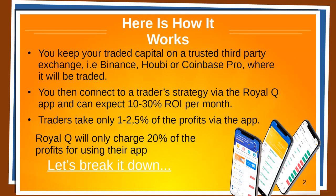You can expect somewhere between 10 to 30% return on your investment per month, but it's not guaranteed — these are real trades happening in real time, so it can be a lot more or a lot less. Traders only take one to two percent of the profits via the app. So basically, if a trader helps you earn a hundred dollars, you just have to pay them one dollar. But the really good traders can have five thousand, ten, fifteen, twenty thousand people connected to them, so that one to two percent quickly adds up.